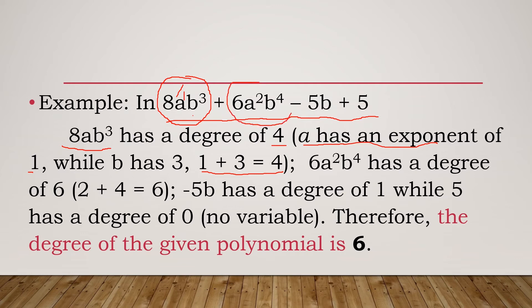In the second term 6a²b⁴, a has exponent 2 and b has exponent 4, so 2 + 4 = 6. In -5b, there is only one variable b with exponent 1. The constant term 5 has degree 0 since it has no variable. The highest sum among 4, 6, and 1 is 6, therefore the degree of this polynomial is 6.